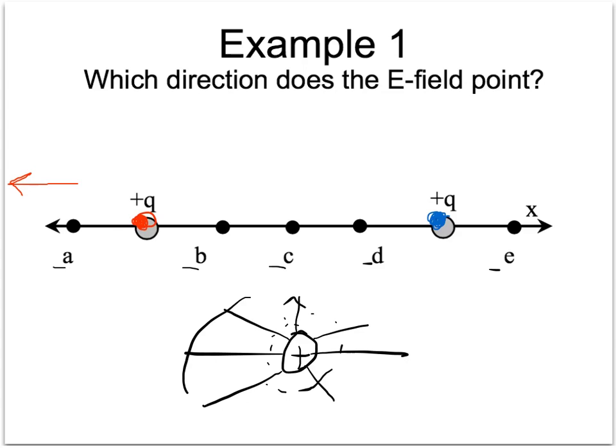The blue Q on the right is farther away and will cause a much smaller field at point A. We'll have a little field line from the blue charge. To get the total field there, we add those two vectors together and find that the direction is to the left at point A. So the answer is the direction is to the left.